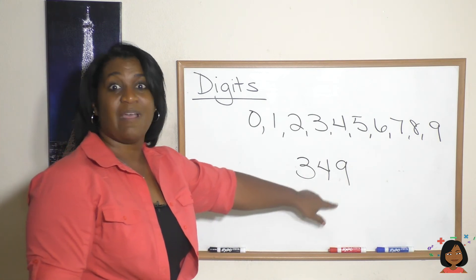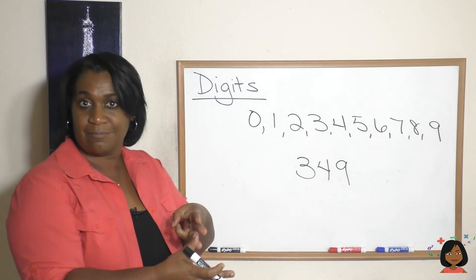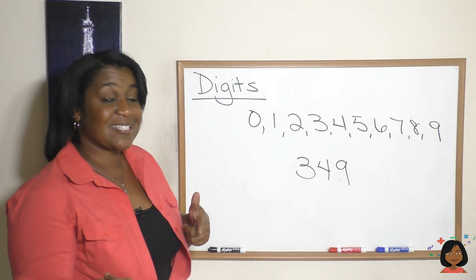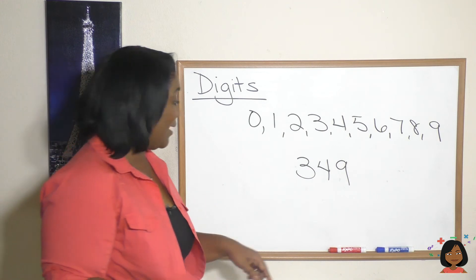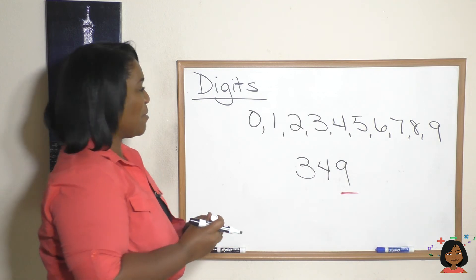Well I've got one, two, and three - it has three digits: a 3, a 4, and a 9. Okay, now what is the last digit of my number? Well my last digit is the number 9. Let's try it with another number.